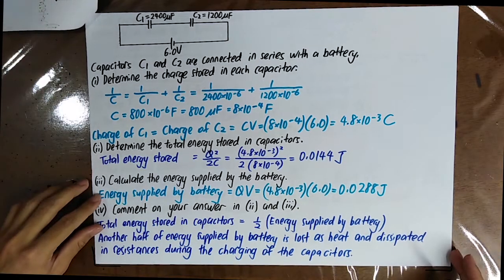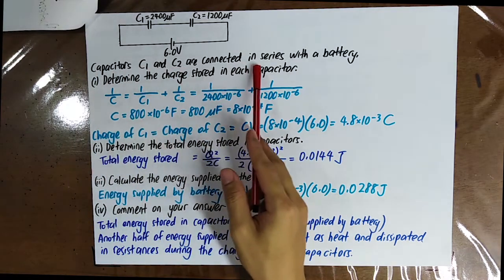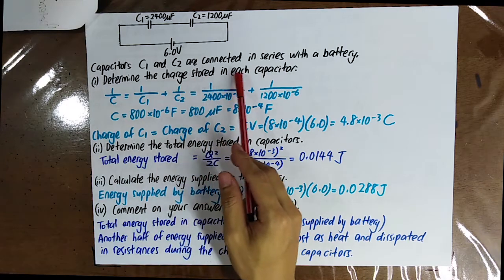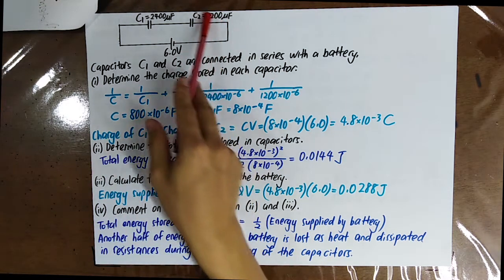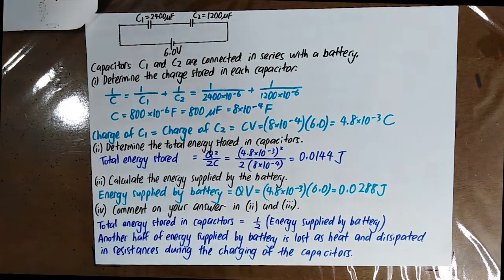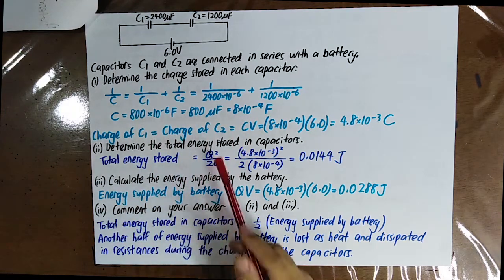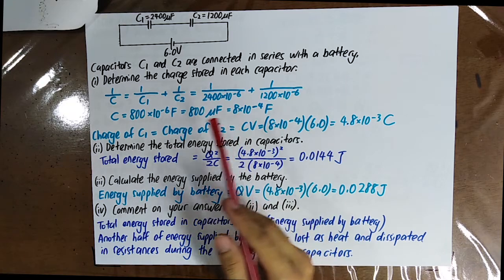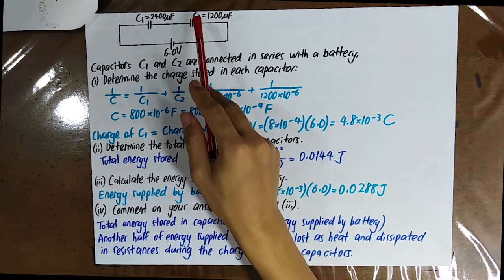Another question: capacitors C1 and C2 are connected in series with a battery. Please determine the charge stored in each capacitor. The capacitors are connected in series, so you find the equivalent capacitance first. Then by using Q equal to CV, you can find the charge of C1, which is also the charge of C2.